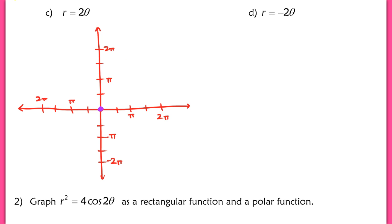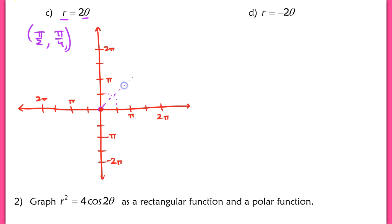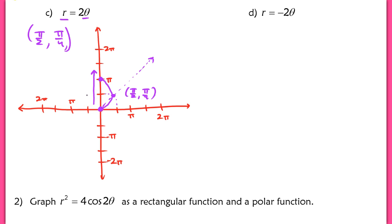Now let's try some alterations of those spirals. Next we're graphing r equals 2 theta. This is really similar to r equals theta — it's just that now, as our theta values increase, r is increasing twice as fast. If theta is pi over 4, we have an r value of pi over 2. When the spinner is pointing at pi over 2, r is pi. You can indicate all of the important intercepts to show how you understand graphing this spiral. I'd like you to try problems C and D on your own for practice.